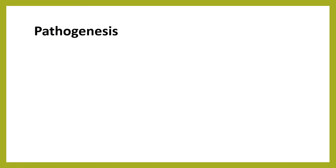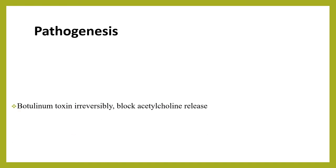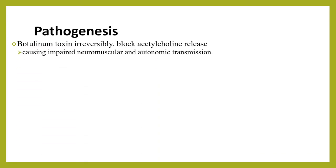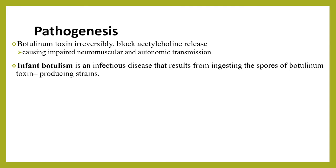Regarding the pathogenesis of botulism, all forms share a final common pathway: botulinum toxin is carried by the bloodstream to the peripheral cholinergic synapse where it binds irreversibly, blocking acetylcholine release and causing impaired neuromuscular and autonomic transmission. Infant botulism is an infectious disease resulting from ingesting spores with subsequent spore germination, multiplication, and production of botulinum toxin in the large intestine.